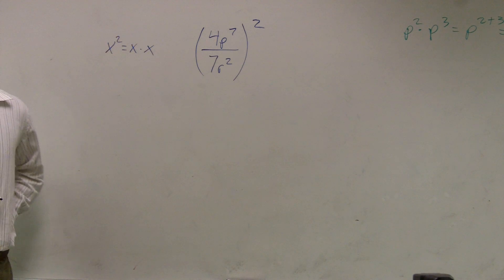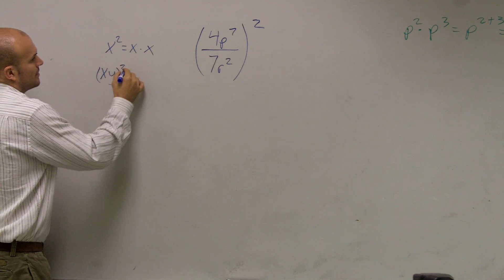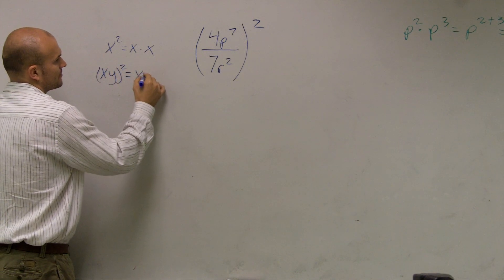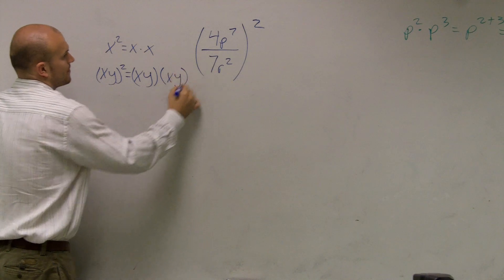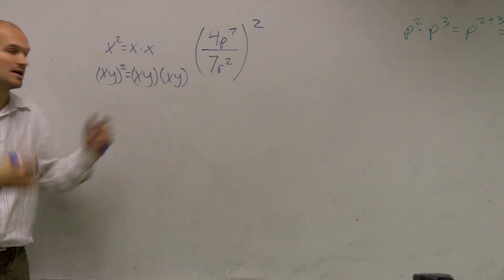x squared equals x times x, right? What if I said xy squared? That would equal xy times xy. Squaring means you take whatever you're taking and multiply by itself.